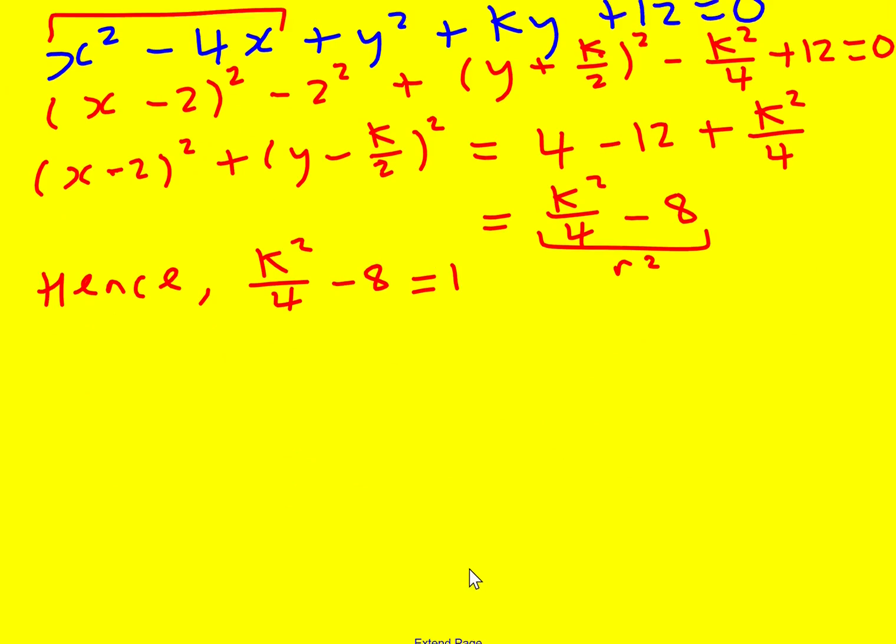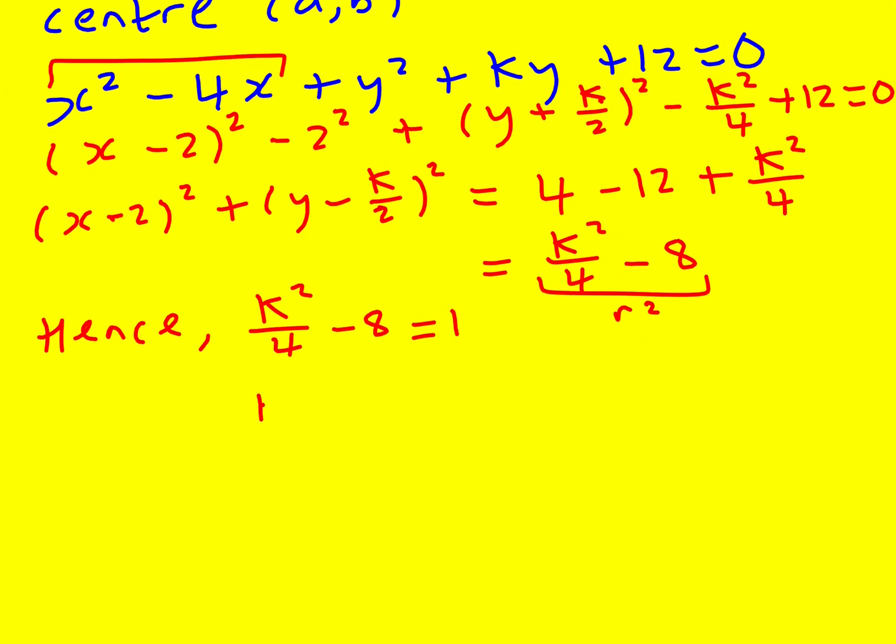And we've got ourselves a quadratic to solve. So add 8 to both sides. k squared over 4 equals 9. k squared equals 36. k will equal plus or minus the square root of 36 which is plus or minus 6.